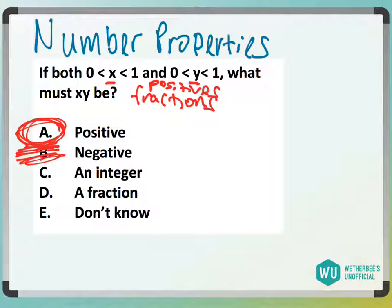A lot of people will pick that it has to be a fraction, but we can have an integer. Let's say x is 2 thirds, which is in between 0 and 1, and y is 3 halves between 0 and 1.